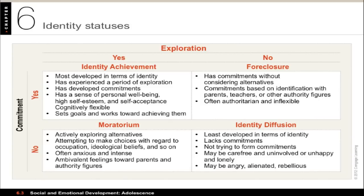The top left one is what Marcia referred to as identity achievement. This is when people have engaged in an active exploration of their identity and have settled upon a conclusion and made a commitment — the most developed identity because they've engaged in the entire process. They have a sense of personal well-being, high self-esteem, self-acceptance, and are also more cognitively flexible than people who simply accepted an identity that somebody else put on them.